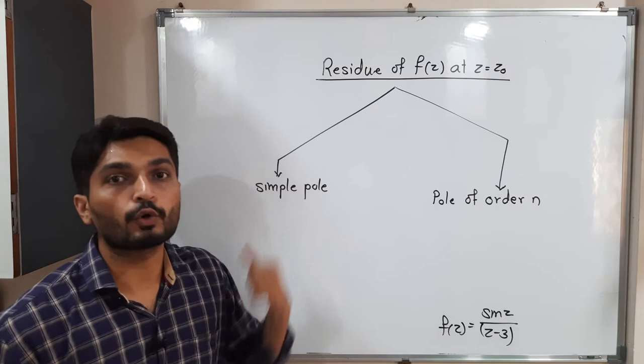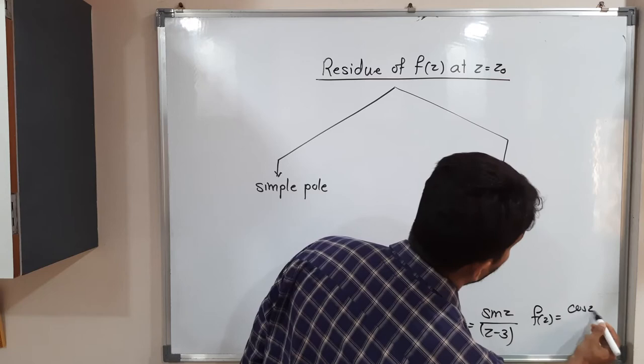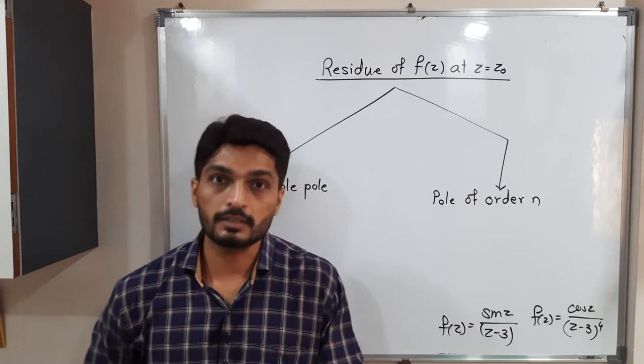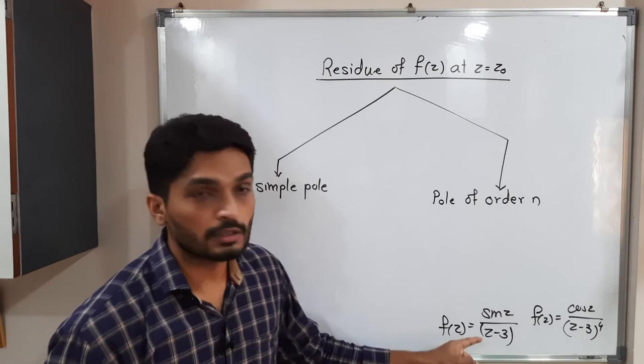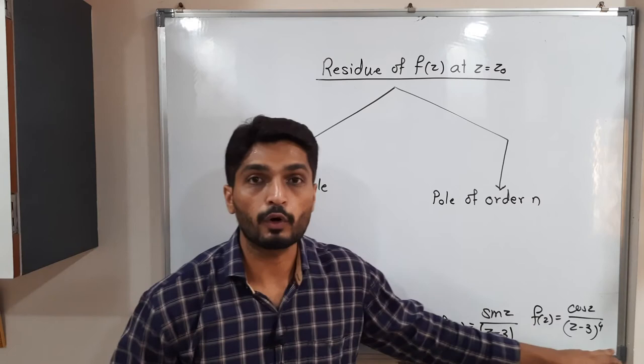But if you have a function like f(z) = cos(z)/(z - 3)⁴, then z = 3 is a pole, no doubt. But what is its order? Order is 4. So for the simple pole, we go for the first formula, and for a pole of order 4, we go for the second formula. Let us discuss what these formulas are.